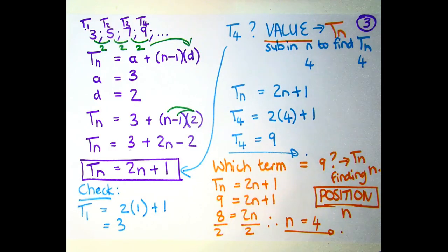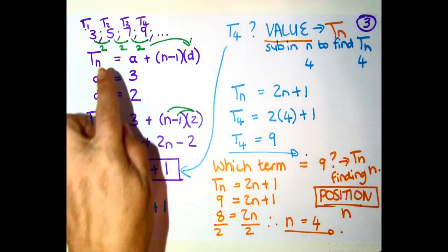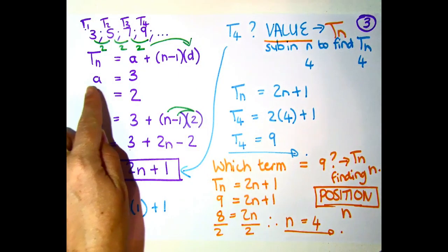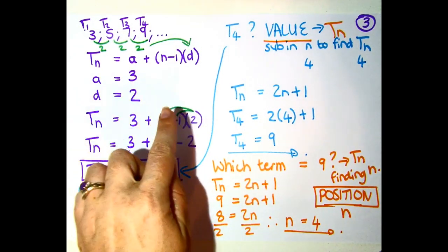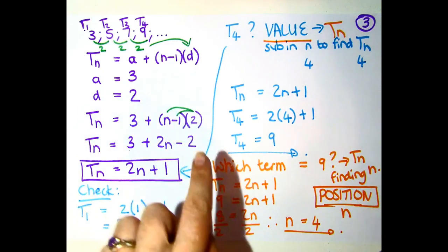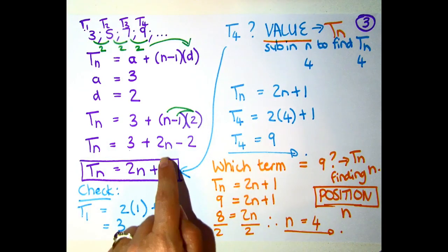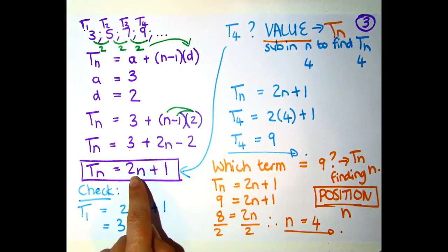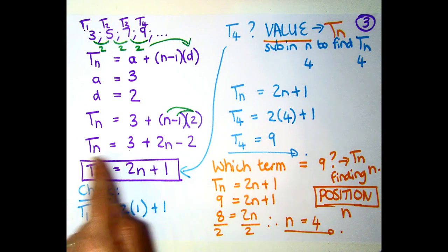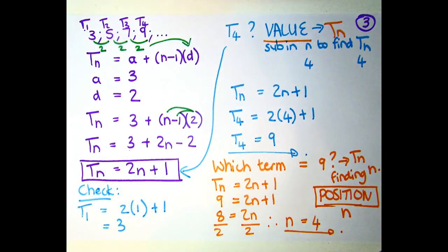When we find the general term for a number pattern, we are using the formula. We are substituting in whatever the first value is. We're substituting in the constant difference, and then we are going to multiply it in correctly. What we always do is we put the one that's got the n in first, so that we have a formula that's got the same conventions as everyone else will be using. You are able to check if you want to that it does actually work out.